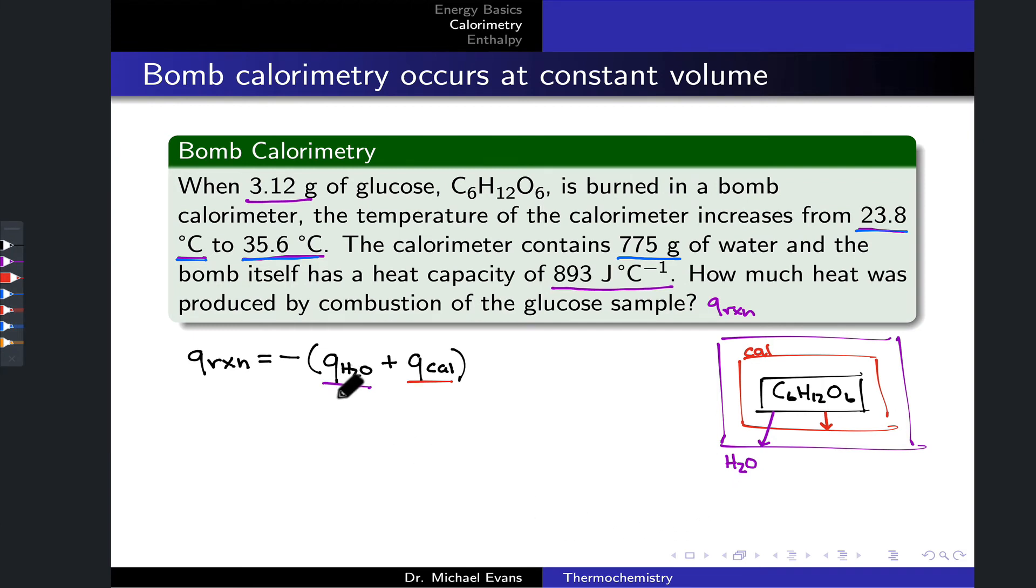Now all we need to do to solve the problem is expand these two terms, Q_H2O and Q_cal. To deal with the Q_H2O term, we can make use of the specific heat of water, the known mass of water, and the known change in temperature. We can multiply all of this out to find the Q_H2O term.